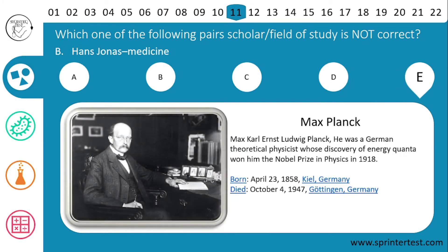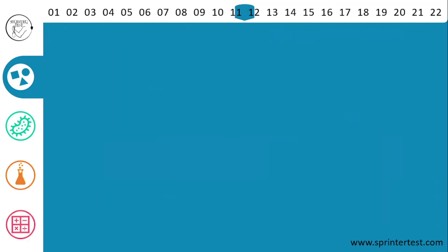E, Max Karl Ernest Ludwig Planck was a German theoretical physicist whose discovery of energy quanta won him the Nobel Prize in Physics in 1918. So his name also matches his field. That concludes question 11, and we move to question 12.